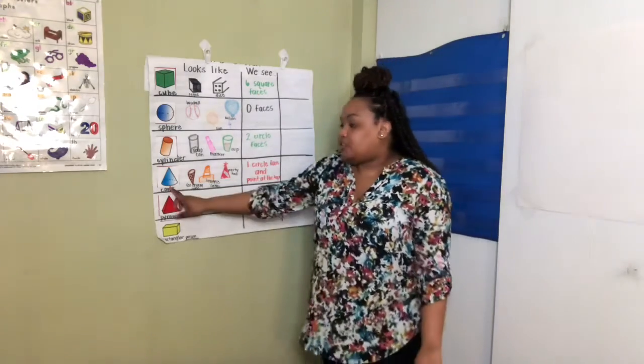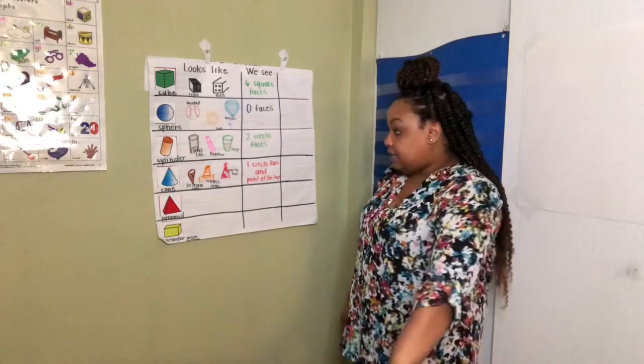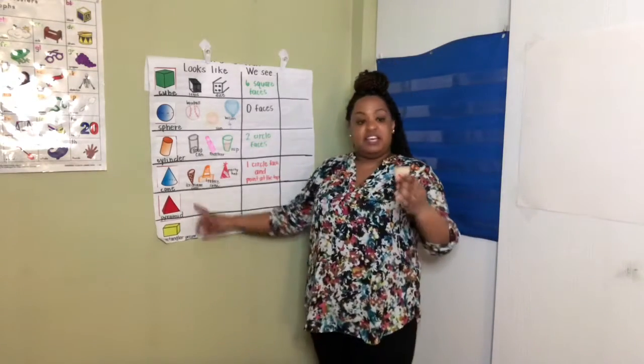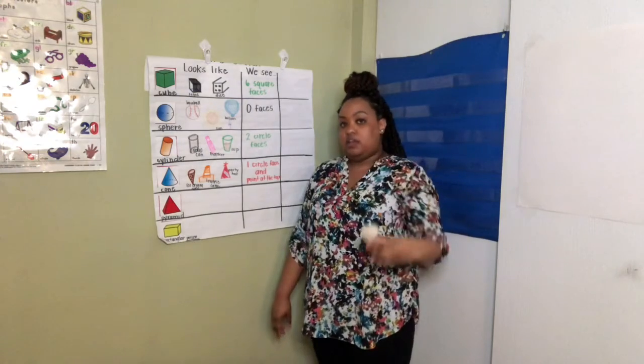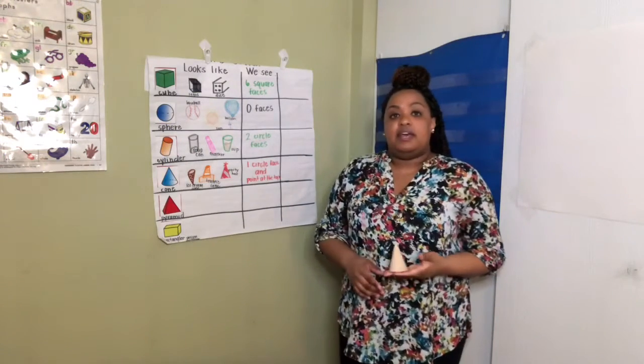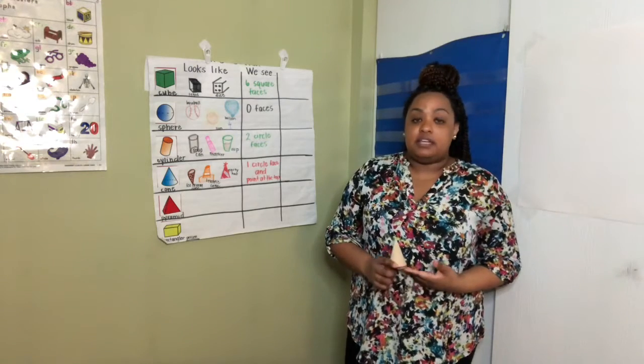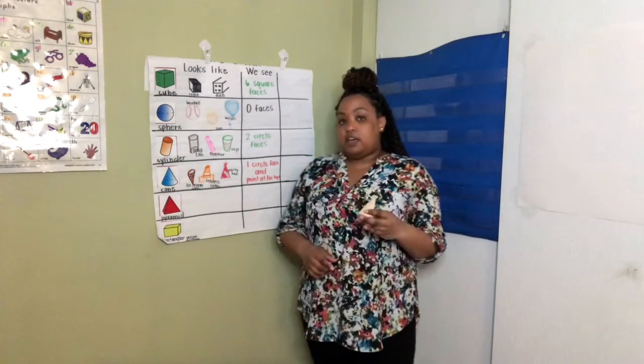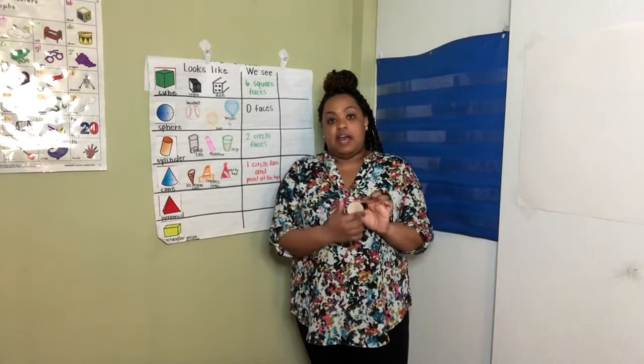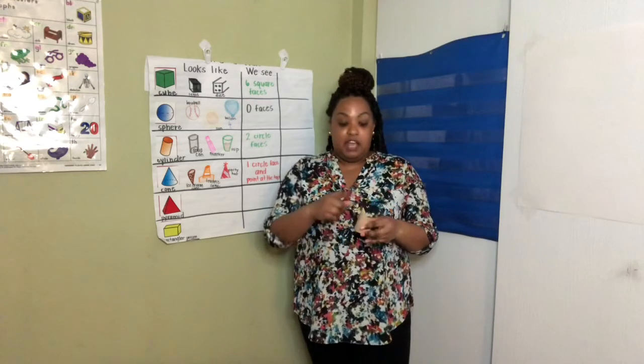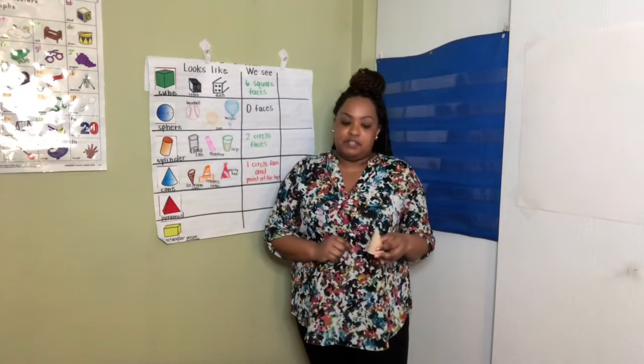We also explored a cone. An ice cream cone is in the shape of a cone. A traffic cone is in the shape of a cone and a party hat is in the shape of a cone. A cone is special because it has a circle face and you also see a point at the top.